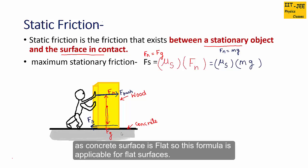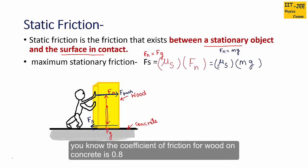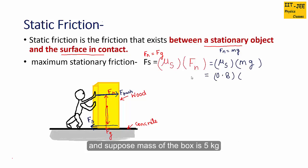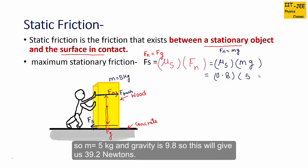Since the concrete surface is flat, this formula is applicable here. The coefficient of friction for wood on concrete is 0.8, and suppose the mass of the box is 5 kg, so M equals 5 and gravity is 9.8. This gives us a maximum static friction of 39.2 N.